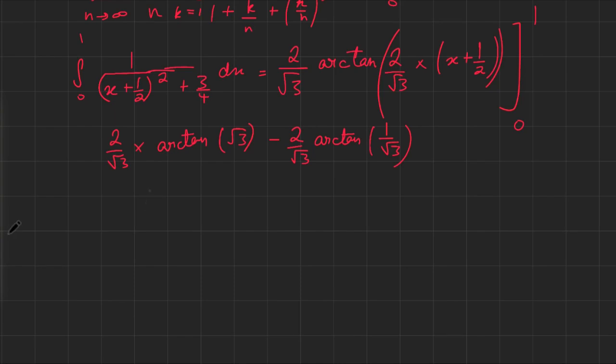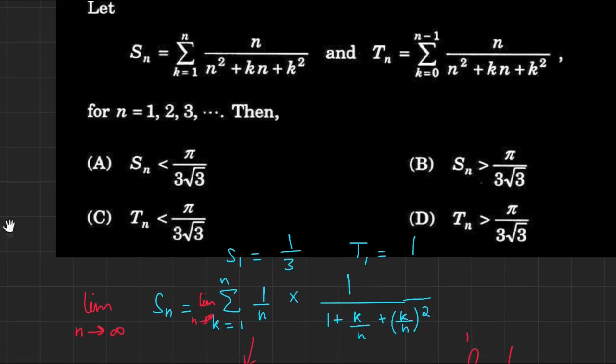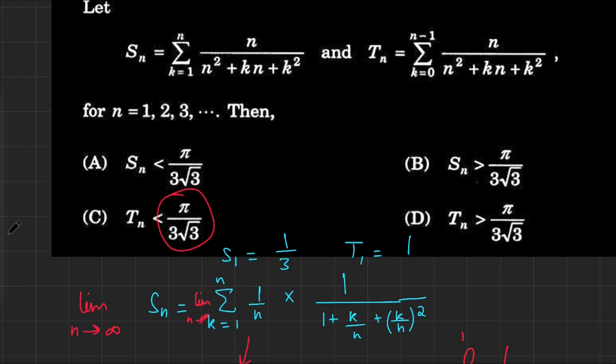Now, if you do have your arctangent and sine and cosine angles memorized, which you probably do if you're appearing for the JEE, you know this would be 2 over the root 3 of π over 3 minus π over 6, which is 2 over the root 3 times π over 6. And that's going to be π over 3 root 3, and now you might notice that this was exactly the expression that we had here.